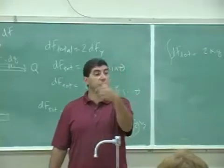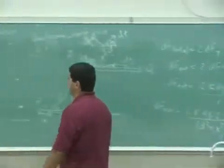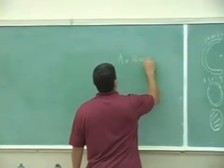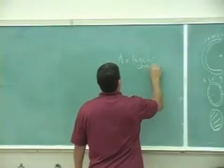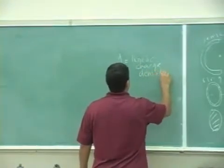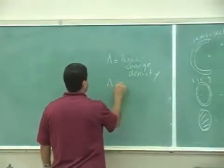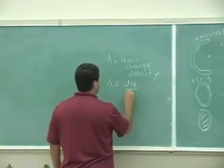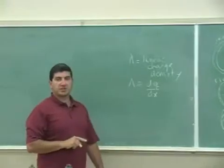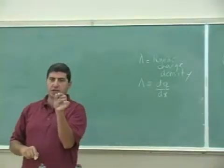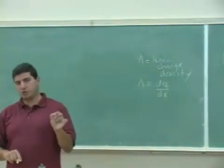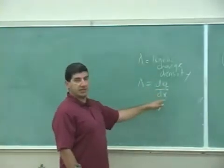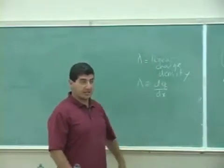So this is gonna be the linear charge density. We're gonna define something known as linear charge density, and we're gonna define this as dq over dx. In other words, it tells you how much charge is concentrated in the rod per unit length of the rod. Therefore, dq is lambda dx, and that's how I can get dx out of that integral.